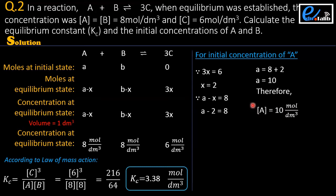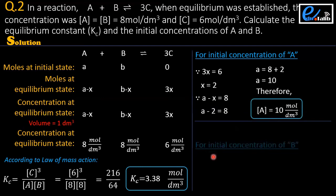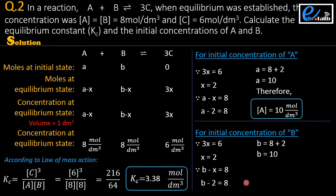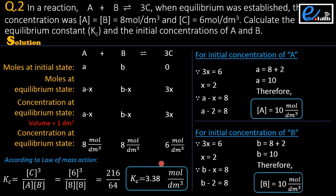Therefore, the concentration of A at initial state is 10 moles per dm³. By the same method we calculate the concentration of B: 3x equals 6, x equals 2, B minus x equals 8, so B equals 10. Dividing by the volume of 1 dm³, the initial concentration of B is 10 moles per dm³.